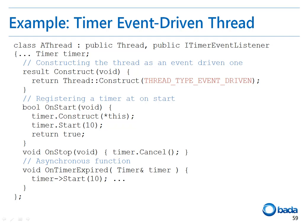In the construct function of the class, the thread type is set to an event-driven thread. In the onStart function of the thread, the timer is constructed with this object as the listener parameter. After that, the start function is called with the timeout parameter set to 10 so that the timer calls the onTimerExpired function in 10 ms.